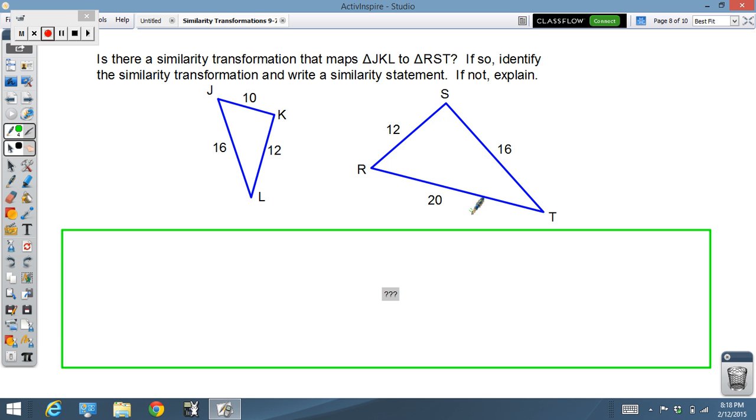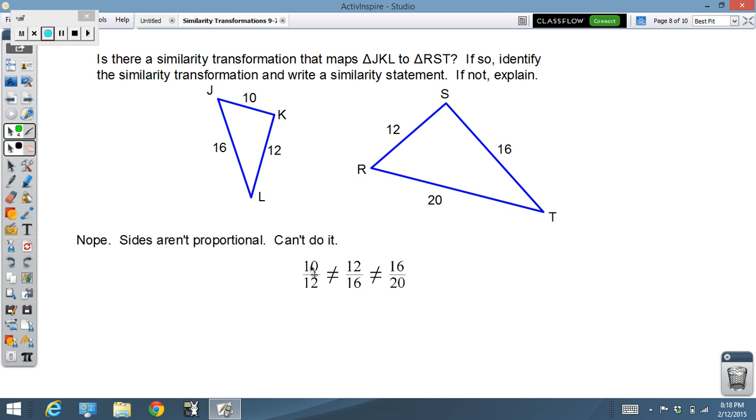Now, be a little bit careful, because how about in this case? Well, the pictures may look like it, but we gave you the numbers for a reason. Notice, the numbers tell us they're not proportional. If I compare the smaller sides, the smallest side, 10 compared to 12. Middle side, 12 compared to 16. Biggest side, 16 compared to 20. Notice none of those sides actually simplify to the same fraction. Sides aren't proportional. They're not similar in the first place.